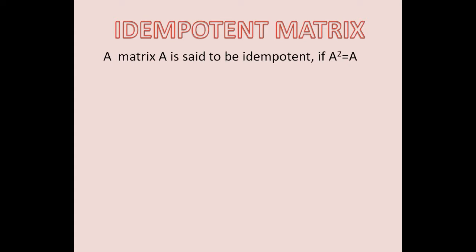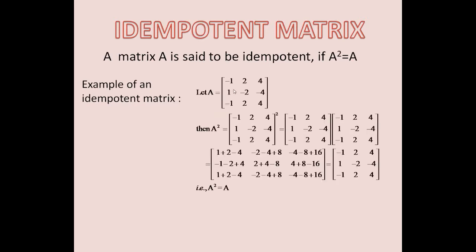We will see an example now. Example of an idempotent matrix. Let A be this matrix: minus 1, 2, 4, 1, minus 2, minus 4, minus 1, 2, 4.